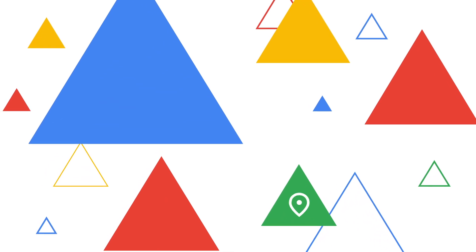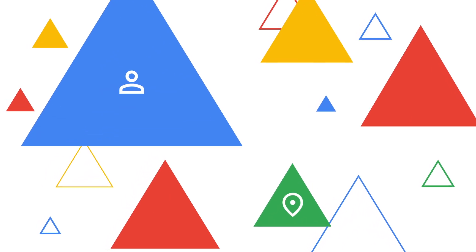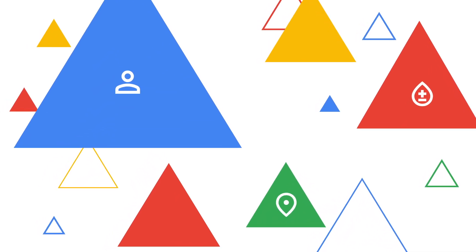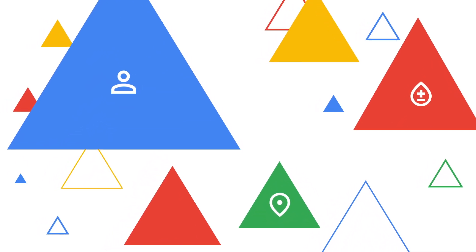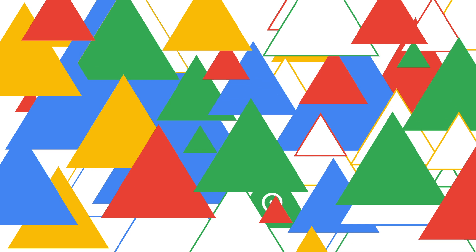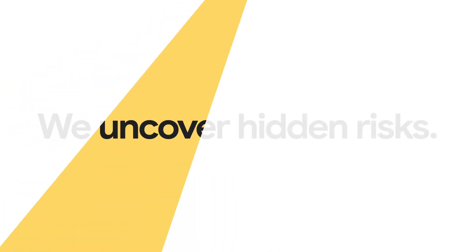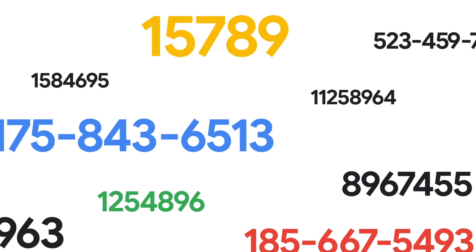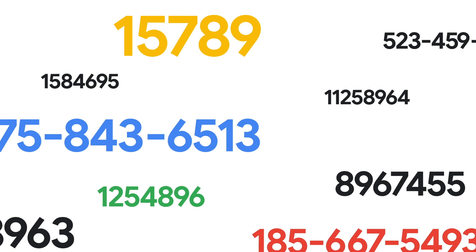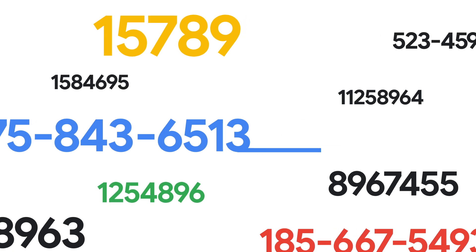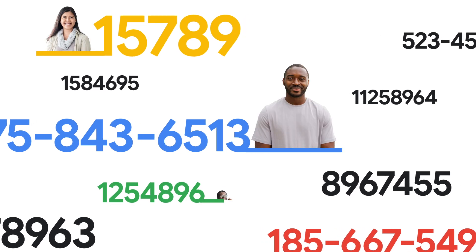Imagine finding an address here, a name there, and a blood type somewhere else. We combine these fragments to reveal the whole picture — Jane Doe, a patient in your EMR system. We uncover hidden risks: those seemingly random numbers could be social security or medical record numbers linked to your patients or employees.